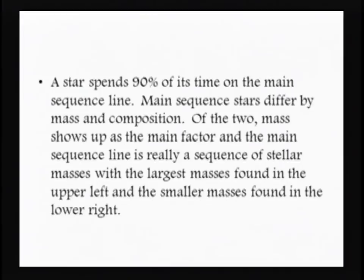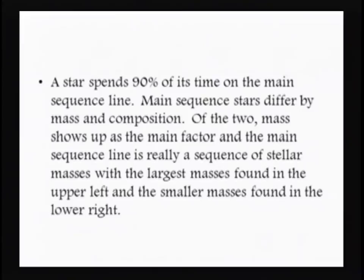A star on the main sequence spends about 90% of its total lifetime on that line, because in the core it's converting hydrogen to helium — what a normal star does. When it moves off the main sequence line, it is no longer converting hydrogen to helium. The only things that differentiate main sequence stars are their mass and their composition — mass being the primary factor, and composition depending on whether it's a first, second, or third generation star.